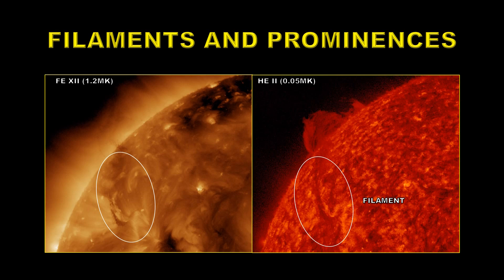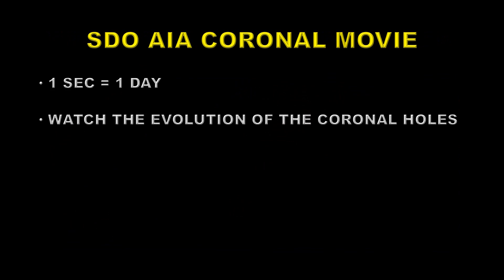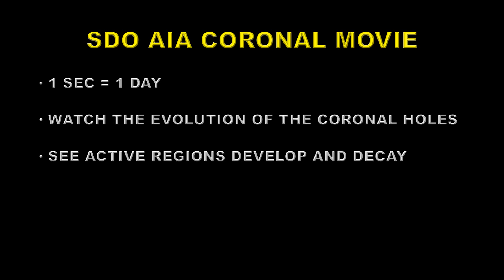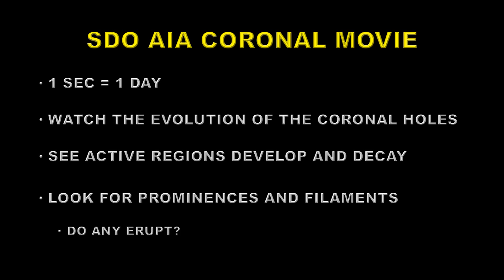These are the sorts of things you want to look out for in the upcoming movie. There are lots of different things to see, so you'll probably have to run through it several times. We're going to look at an SDO AIA coronal movie where one second is approximately equal to one day. Watch for the evolution of the coronal holes, see active regions develop and decay, look for prominences and filaments, and see if you can spot any erupting.